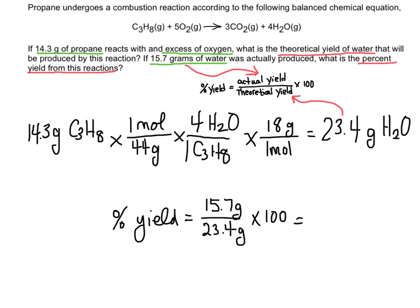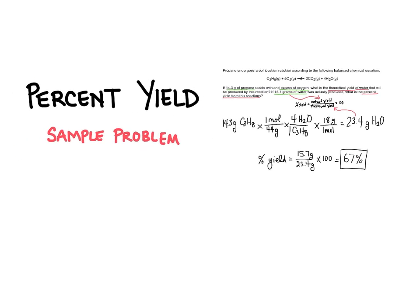So I take the actual yield and the theoretical yield, divide those two, times by 100, and I get 67%. So this reaction went with a 67% yield. And that is percent yield.